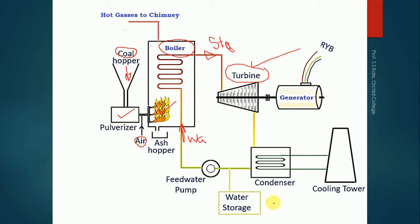The next component is the condenser, which is a device that converts steam into water through a condensation process. At the input there is steam and at the output there is water. Then the feed water pump takes water from one side and supplies it further in the cycle.